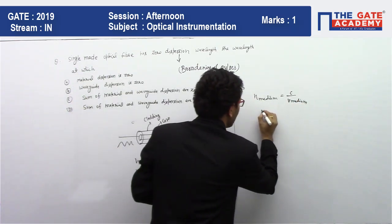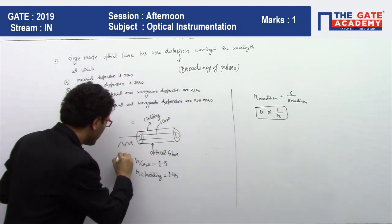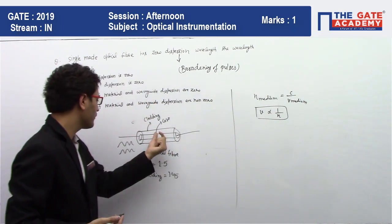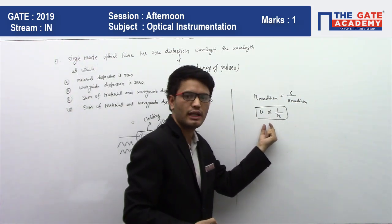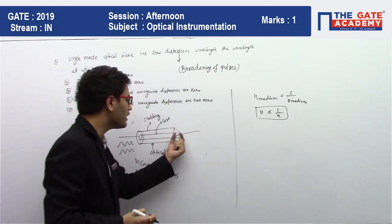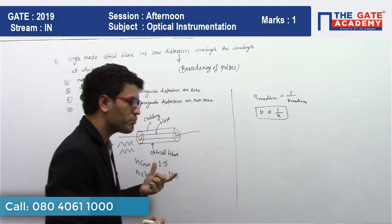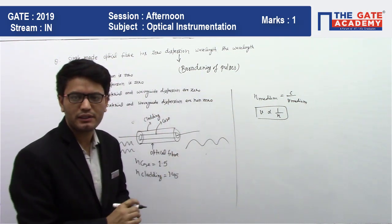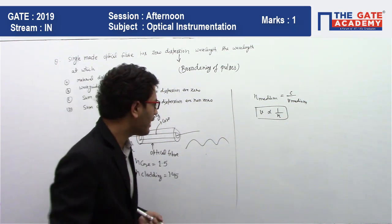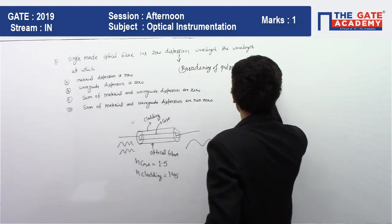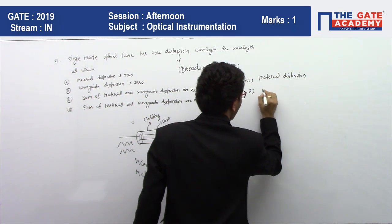Velocity is inversely proportional to the refractive index. The core has a different refractive index than the cladding, so due to this variation, the velocity of light changes. At the output side, whatever information should be received will not arrive at the same time interval, so my pulse is going to broaden — that is basically dispersion. We have two types of dispersion: material dispersion and waveguide dispersion.